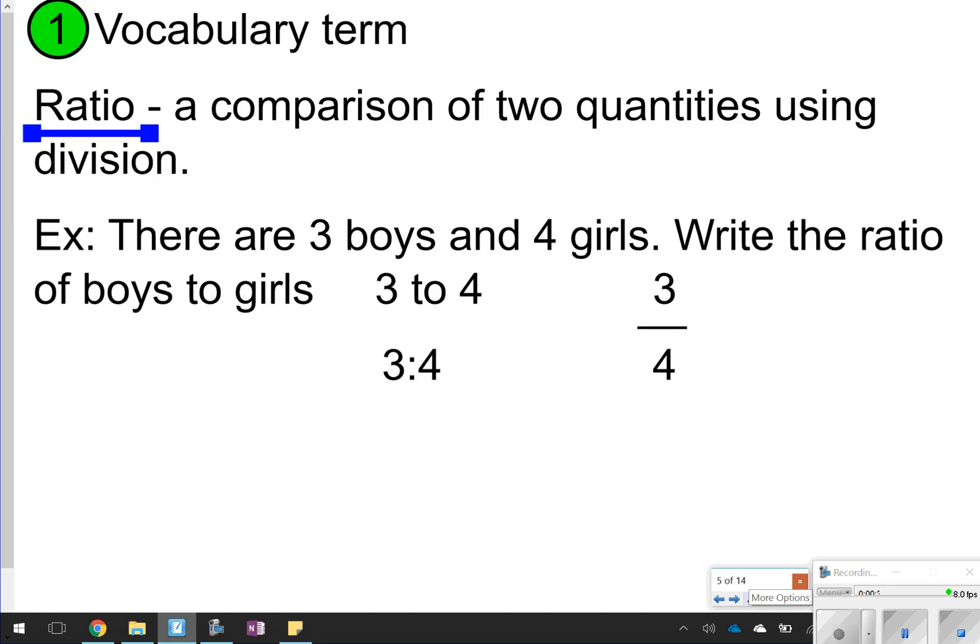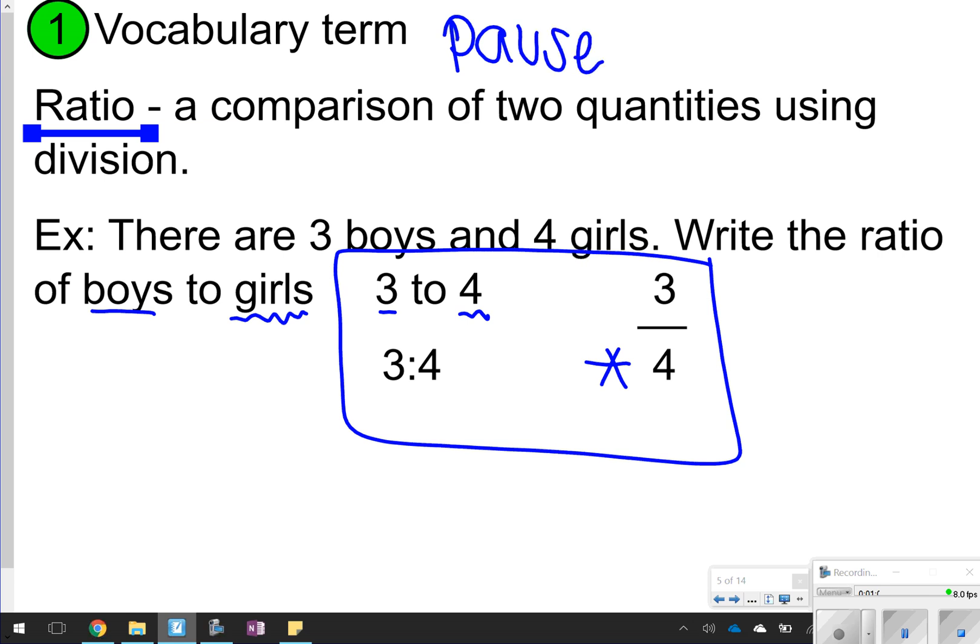The first thing we're going to write down in our notes is what a ratio is. A ratio is just when you compare two numbers using division. The example I have written here for you are there are three boys and four girls, so write the ratio of boys to girls. Because boys was listed first, the number for boys goes first, and since girls was listed second, the number for girls is listed as second. The three ways you're going to write a ratio are these ways: 3 to 4, 3 colon 4, or 3 over 4. 3 over 4 is going to be the most common way, but I wanted to make sure that you knew all three ways. Go ahead and take time now to pause the video to write down the definition and the three ways that a ratio is written. And once you're done, click play to see what number 2 is.